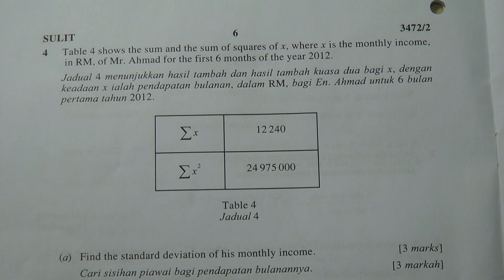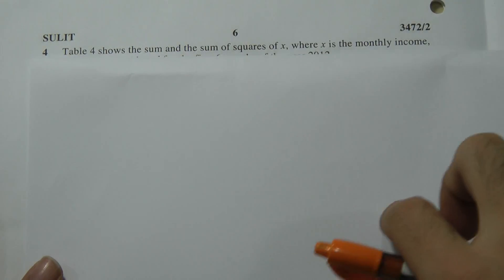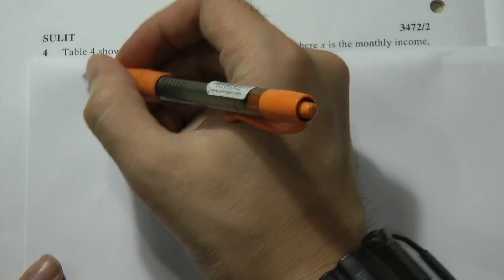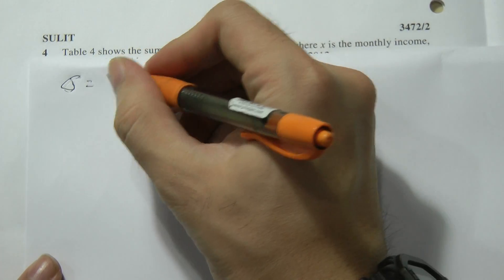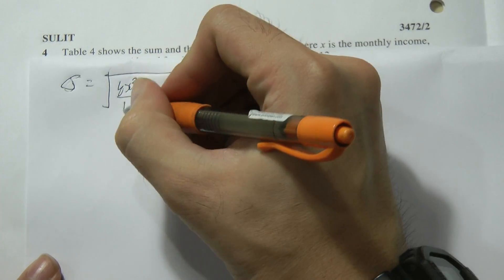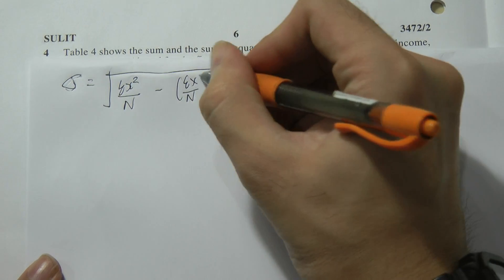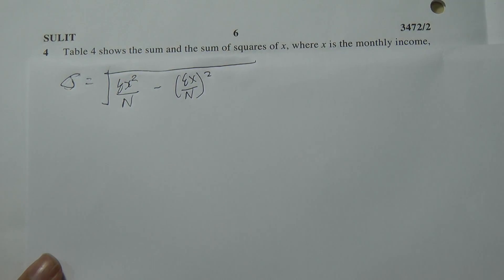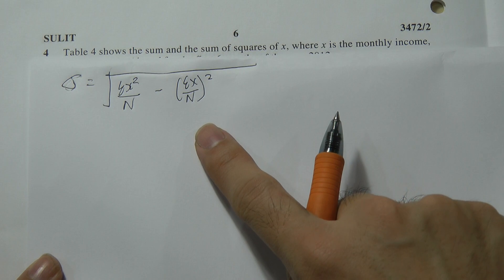Before you start to find the standard deviation, you have to know the formula. The formula for standard deviation (SD) is: SD equals the square root of (sum of x squared divided by n) minus (sum of x divided by n) squared.